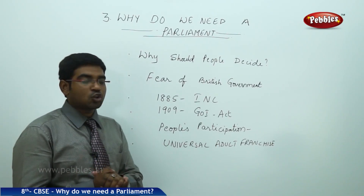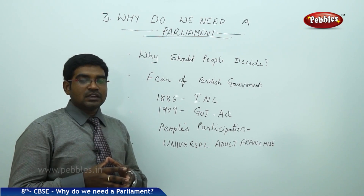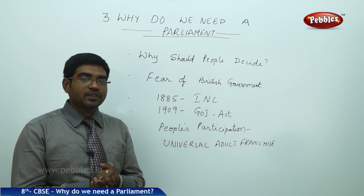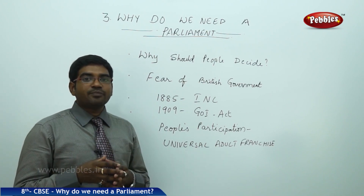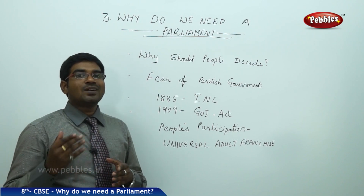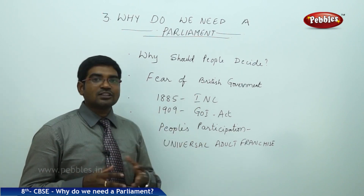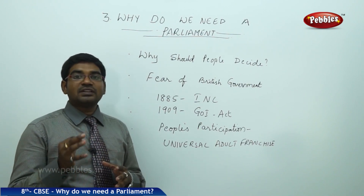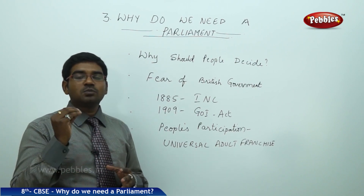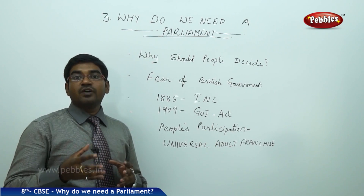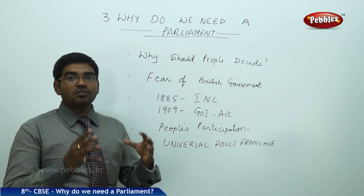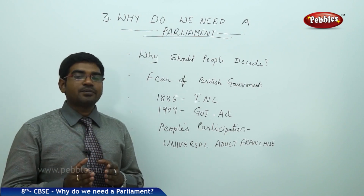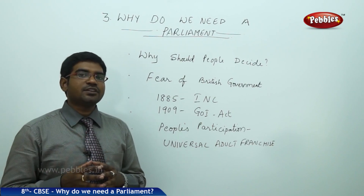It was only after the formation of the Indian National Congress (INC) in 1885 that Indians got a proper channel to express their dissatisfaction. Through the INC, Indians started to become united and express their discontent towards British rule. With growing dissatisfaction, the Government of India Act of 1909 was passed, in which representation was given to a very small percentage of people incorporated into the British administration. As awareness grew, people started to question why laws were being passed against the interest of Indians.